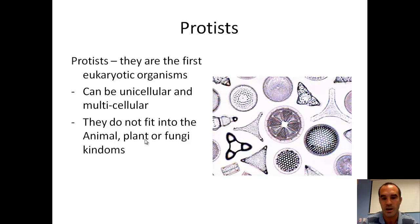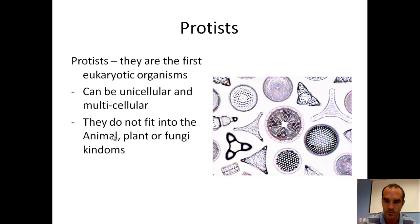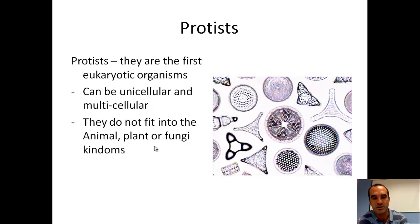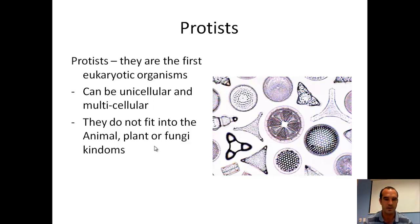The last group is protists. There's a picture of diatoms — a type of protist with a glass-like shell around them in all kinds of different shapes. Protists were the first eukaryotic organisms, transitioning from simple bacterial cells to unicellular eukaryotic cells. Some protists can even be multicellular. Protists basically don't fit into any other kingdom — they're very unique in having a variety of ways of living. They can be like plants, like animals, or even like fungi, but don't fit into any of those groups.